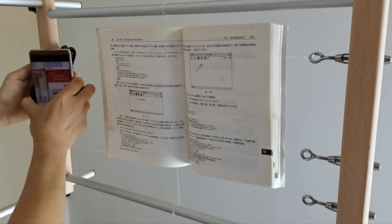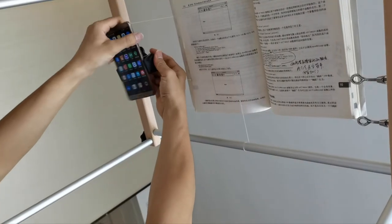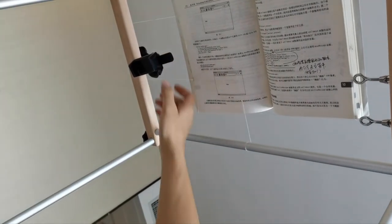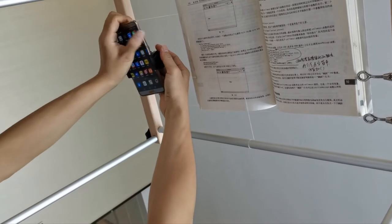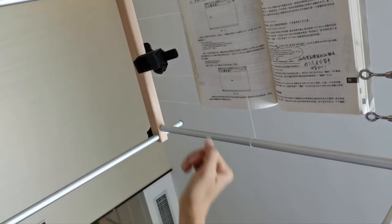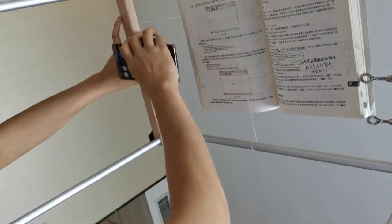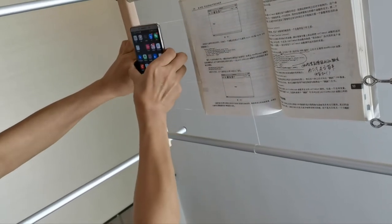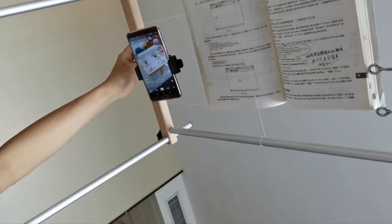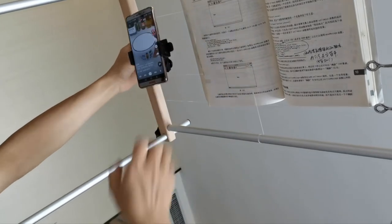The phone clip is 360 degrees rotatable and able to be opened by only one hand. It enables you to put or remove the phone quickly and easily. Adjusting the angle and position.